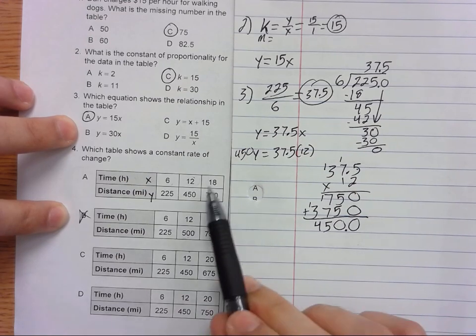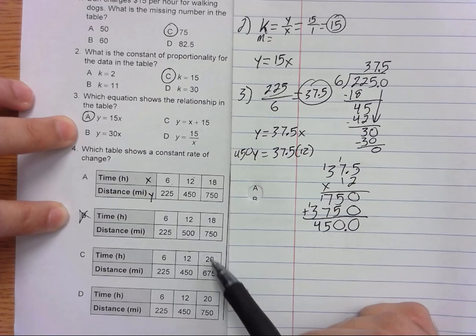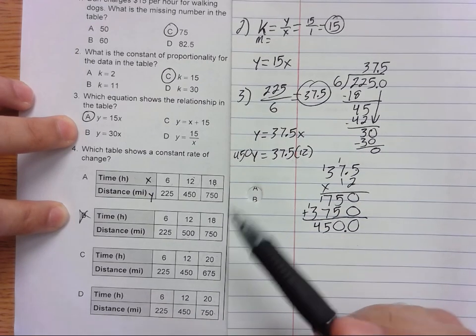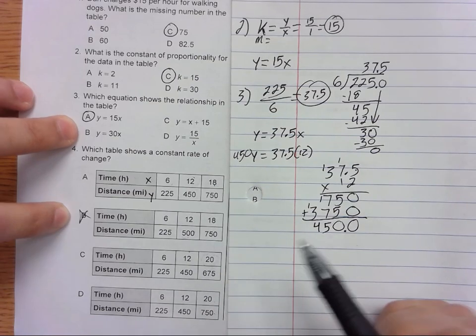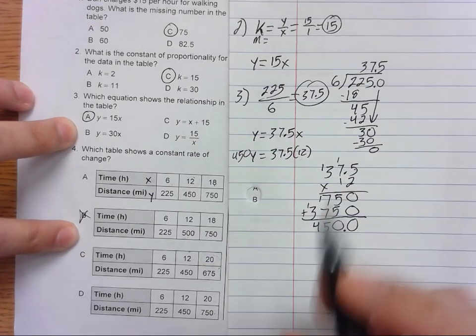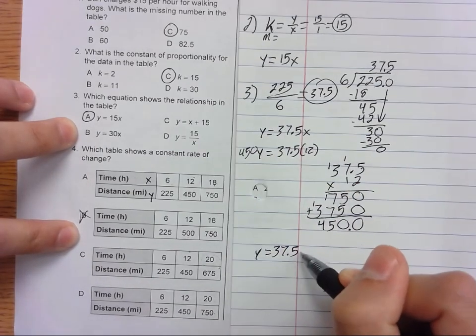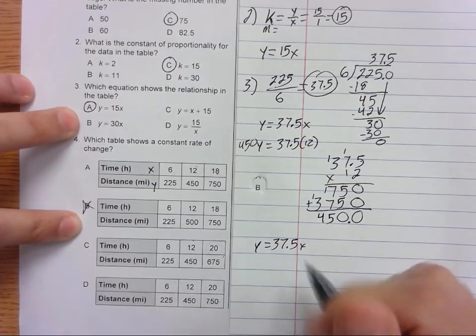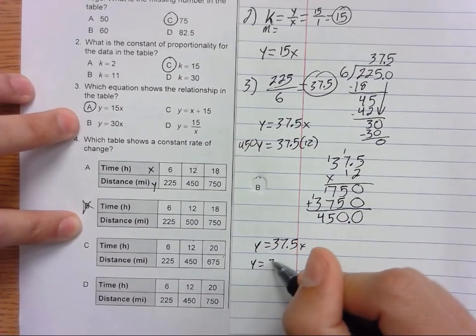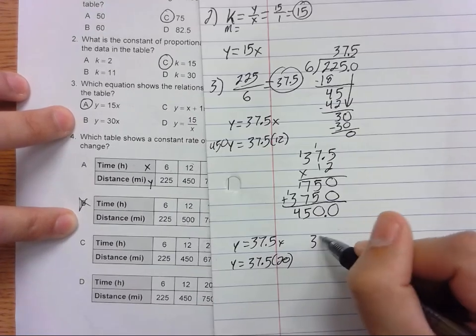So we could do 18, but I'm going to try 20. Because if I try this one and I know that 20 doesn't give us either of these, then this has to be the answer. And if 20 does work, then that can't be the answer. So I'm just going to pick this one here. I'm going to stick with our Y equals 37.5 times X, and instead of X I'm going to do 37.5 times 20.